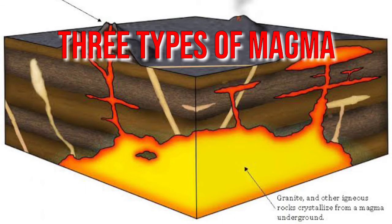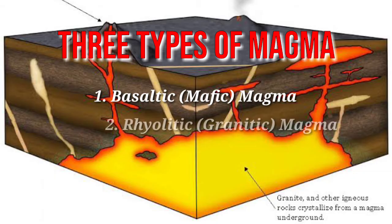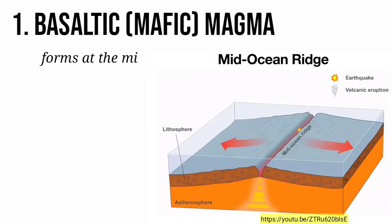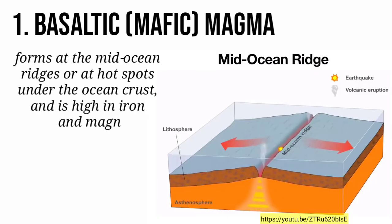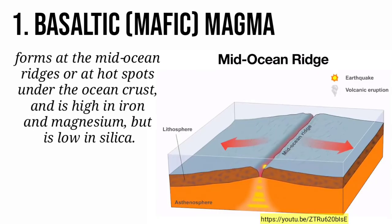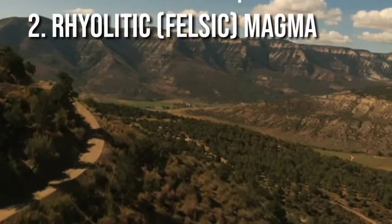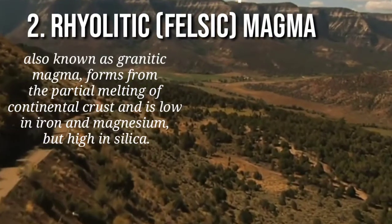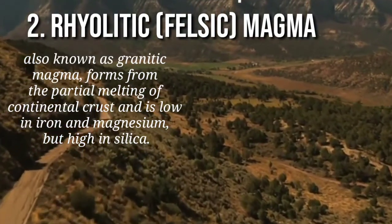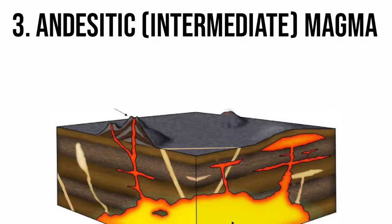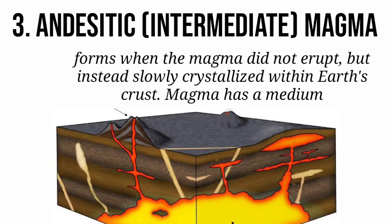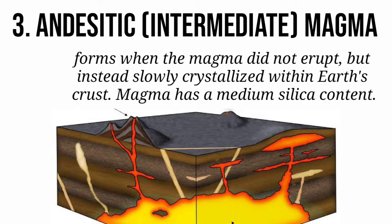There are three types of magma: the basaltic or mafic magma, the rhyolitic or granitic magma, and the andesitic or intermediate magma. Basaltic or mafic magma forms at the mid-ocean ridges or at hot spots under the ocean crust. This is high in iron and magnesium but low in silica. We also have the andesitic or intermediate magma. This forms when the magma did not erupt but instead slowly crystallized within the Earth's crust. This magma has a medium silica content.